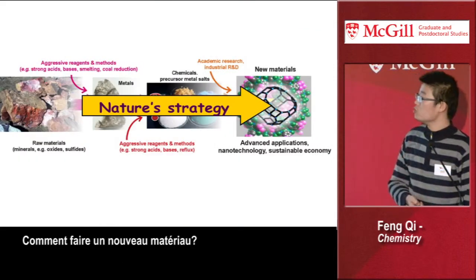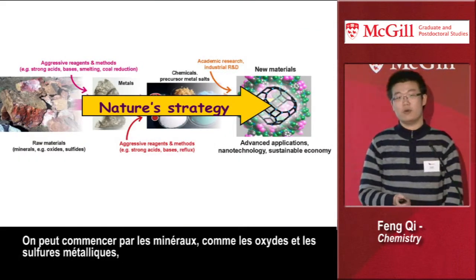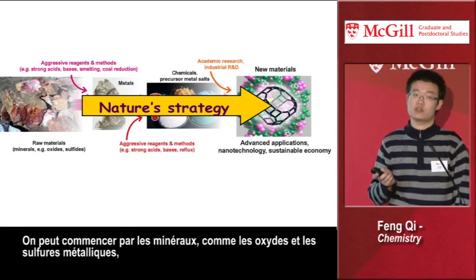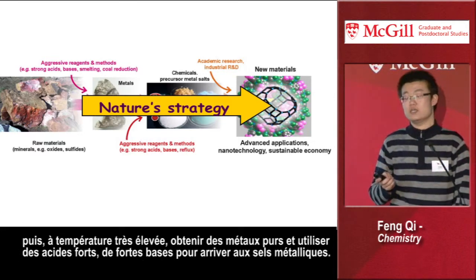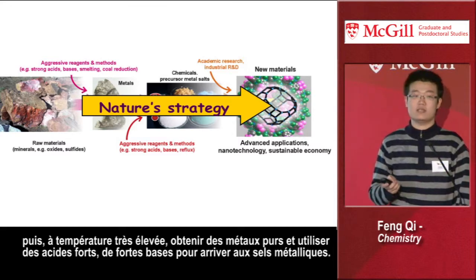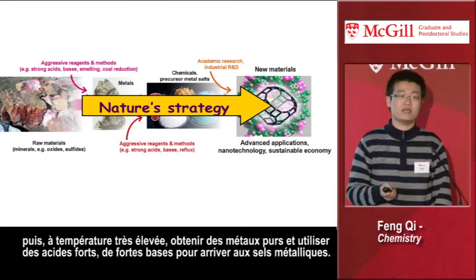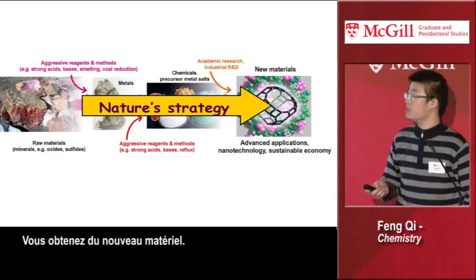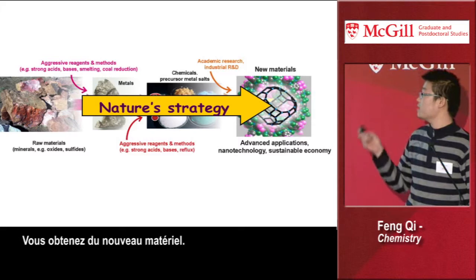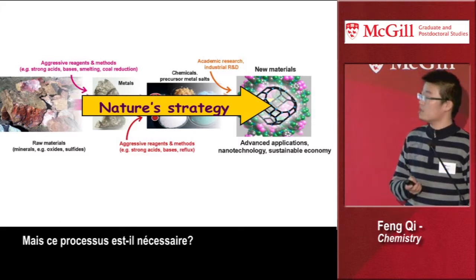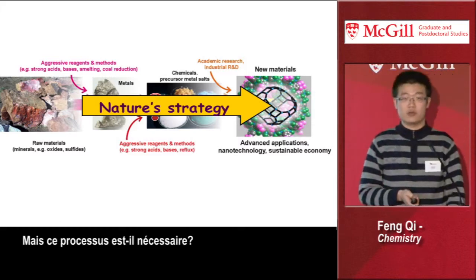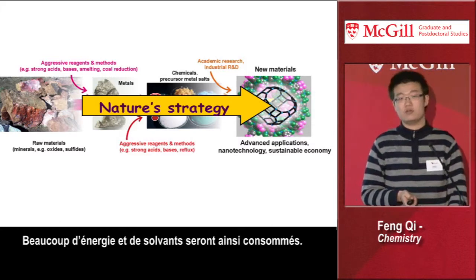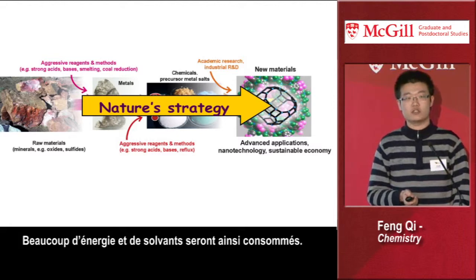So how do people make new materials? People start from minerals such as metal oxides and metal sulfides. They use very high temperatures to get pure metals, and then they use strong acids and strong bases to get metal salts, and then they get new materials. But is this process really necessary? A lot of energy and solvent are consumed in this process.